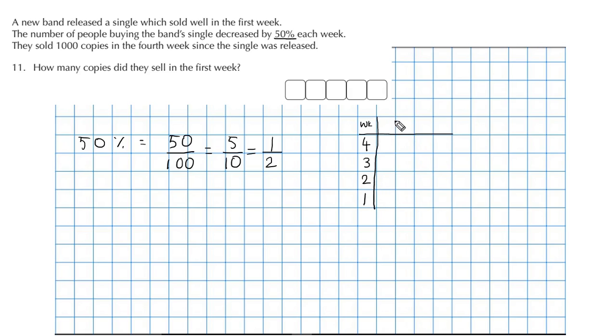Okay, so this is the week, and we need to figure out how many singles. So this is the number of singles. What do we know? We know that they sold 1000 copies in the fourth week, so 1000. We also know that this amount is half of what they sold in week 3.